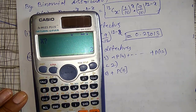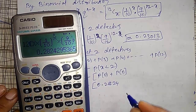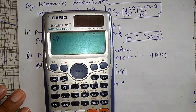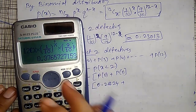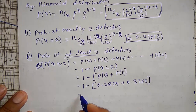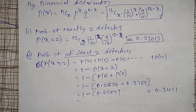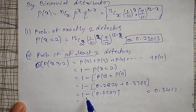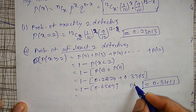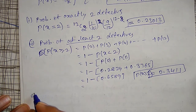Using the calculator with the formula already entered, press Calc and set X equal to 0; the answer is 0.2824. Press equals again for X equal to 1; the answer is 0.3765. Therefore, the probability of at least two defectives is 1 minus (0.2824 + 0.3765), which equals 0.3411. This is P(X ≥ 2).